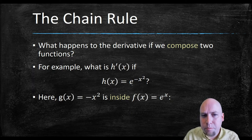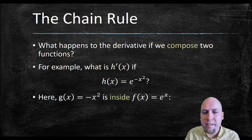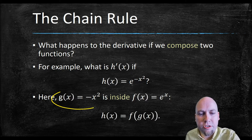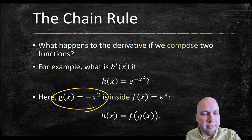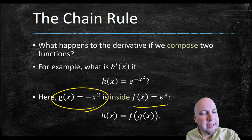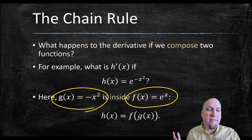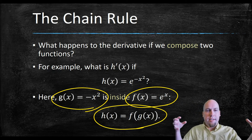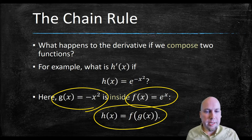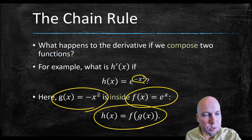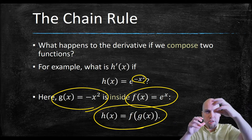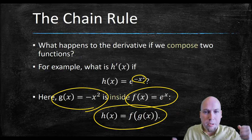So that's the problem we're going to look at today. Just to give a little bit of notation, we're usually going to refer to the inside function as g of x and the outside function as f of x, and then the composite function is h of x — it's what you get if you put g within f. So in this case, g, the inner function, is minus x squared, and f, the outer function, is the exponential function — e to the power of the input.